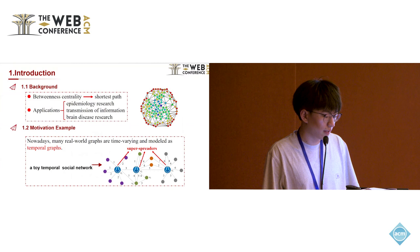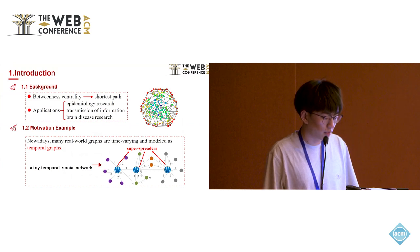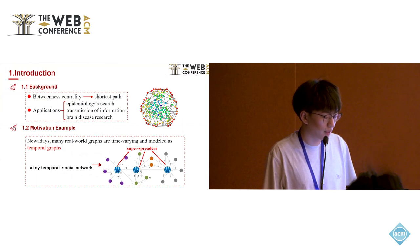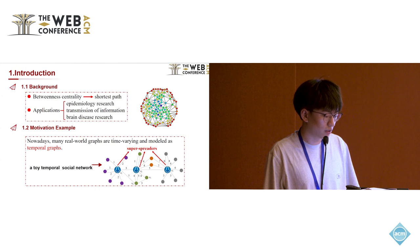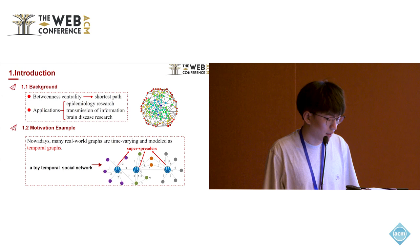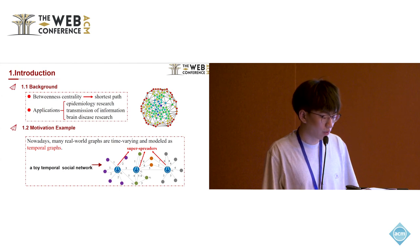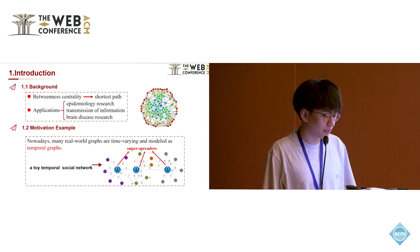Betweenness Centrality is a centrality based on shortest path. It's widely used for measuring vertex importance in graph analytics. It can be applied to epidemiology research, transmission of information, and brain disease research. Nowadays, many real-world graphs are time-varying and modeled as temporal graphs, such as a toy temporal social network.